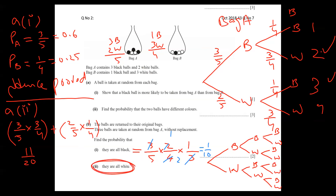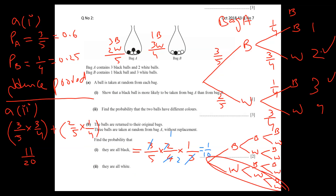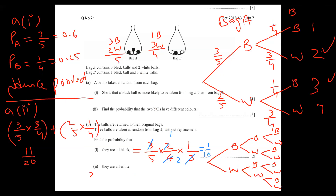What about all three balls being white? All white is not possible, because there are only two white balls in Bag A — you cannot draw three white balls without replacement. The probability for the third white ball would be zero, so the answer for all three white is zero. No need to calculate further.